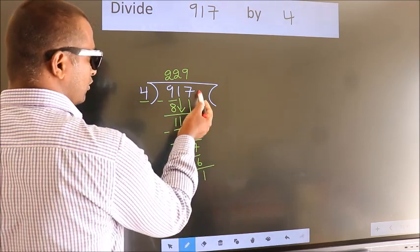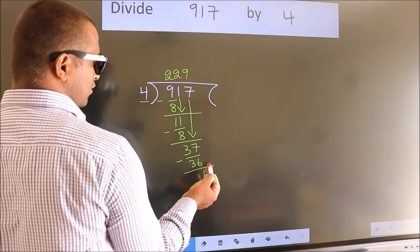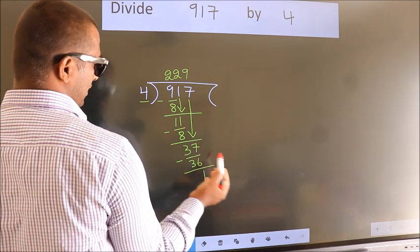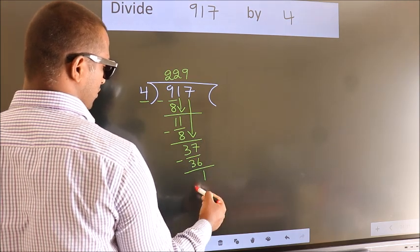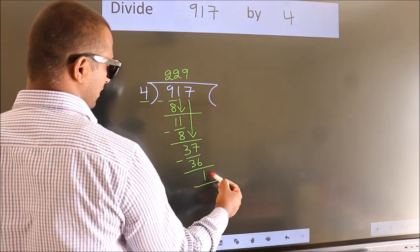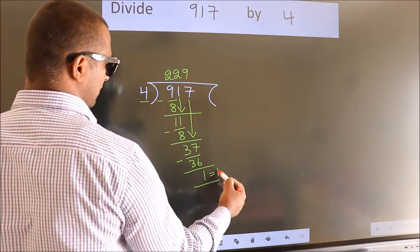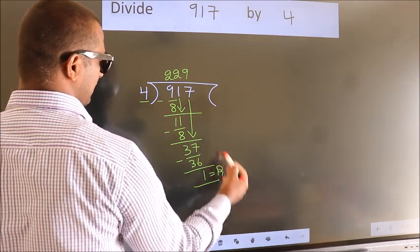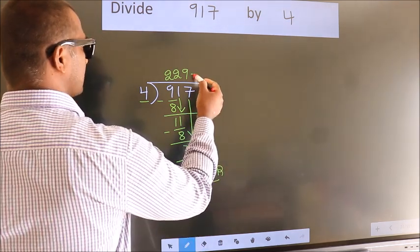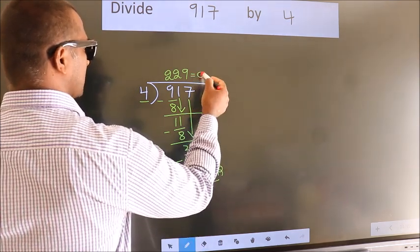No more numbers to bring down, so we stop here. This is our remainder. This is our quotient.